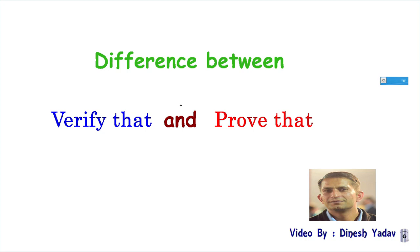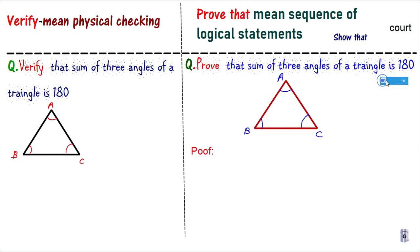Today's topic is the difference between 'verify that' and 'prove that'. This is why maximum students make a mistake — they consider both the same, but there is a difference. In maths, 'verify' means physical checking. For example, if I give you money, I'll say 'check करो कि money complete है या नहीं' — that physical checking is what 'verify' means.